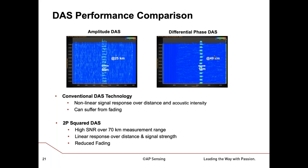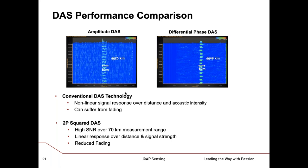Here's another example: on the left, AP Sensing's early DAS at 25 kilometres, showing a signal that's not uniform in intensity along it, which it should be. The plot on the right is from a differential phase DAS, doing phase differencing along the length, and you can see the signal is a uniform strength. Also, we're now doing this at 49 kilometres rather than 25. So although we call them both DAS, they're definitely not the same in terms of signal quality and what you can do with the signal afterwards.